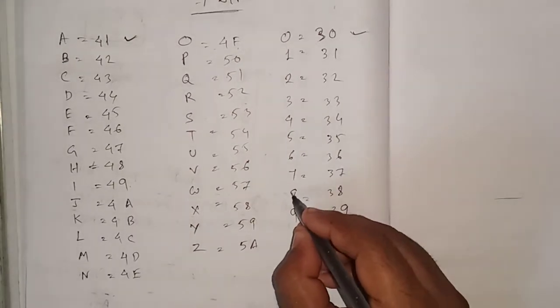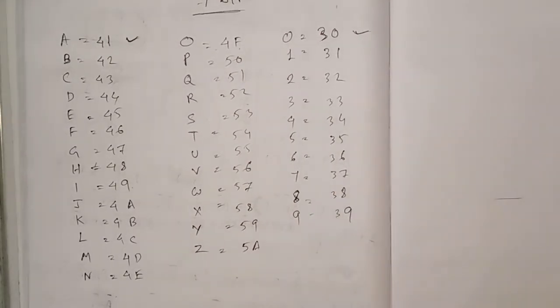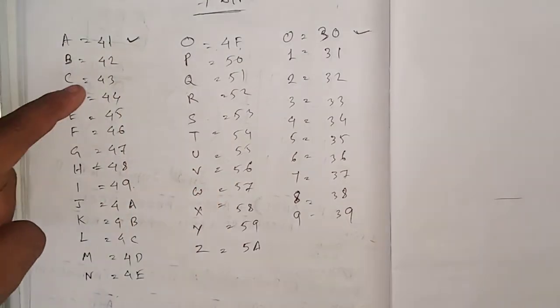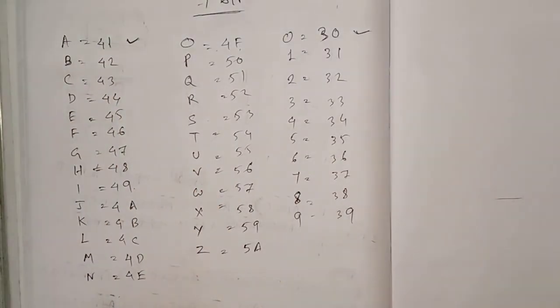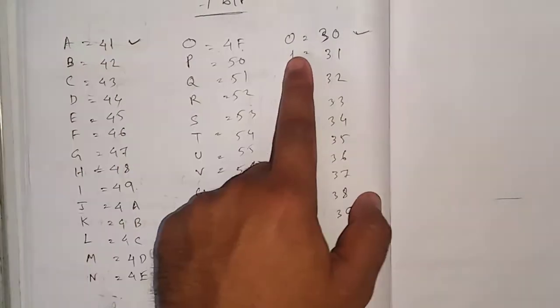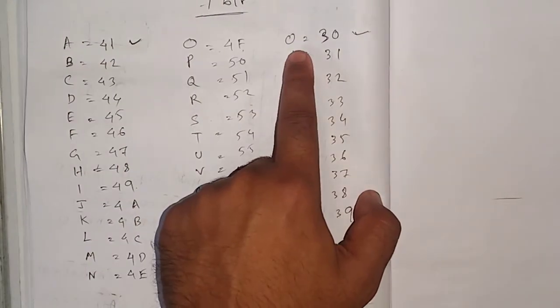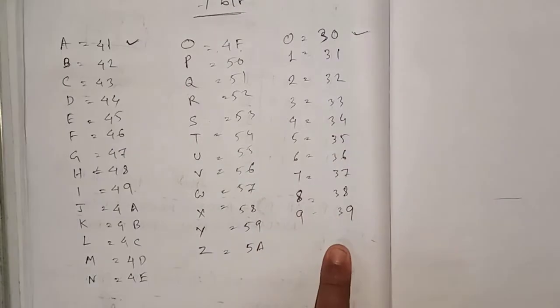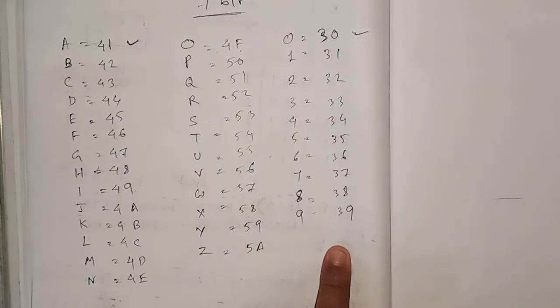So how many things do you need to remember? Just two: the value of capital A (which is 41), and the value of digit 0 (which is 30). The remaining values will be automatically created. Clear? So easy it is.